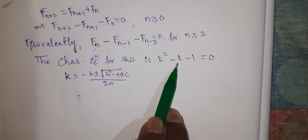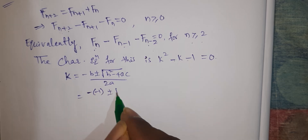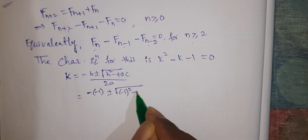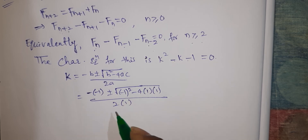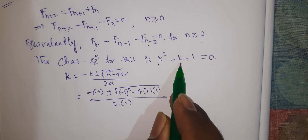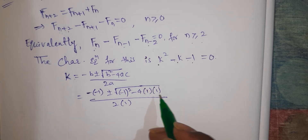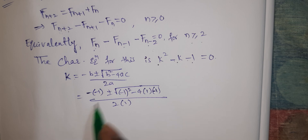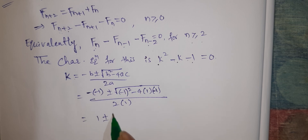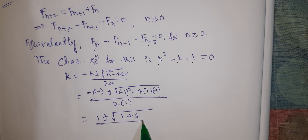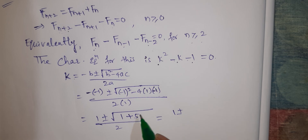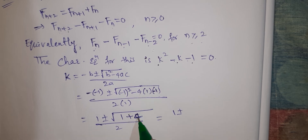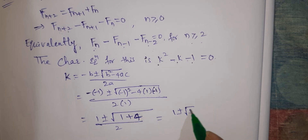Here b = -1, a = 1, and c = -1. So k = (minus of minus 1) ± √((-1)² - 4·1·(-1)) / (2·1) = 1 ± √(1 + 4) / 2 = 1 ± √5 / 2.